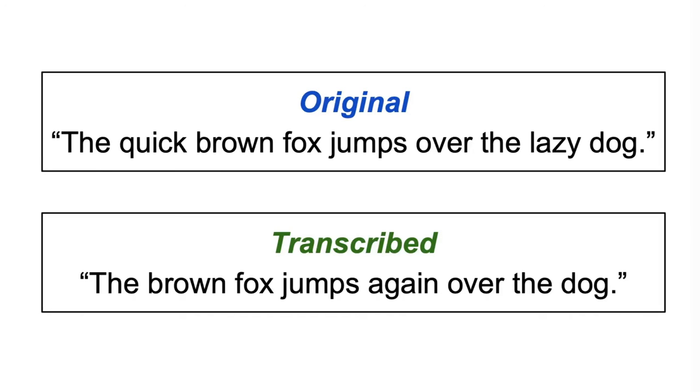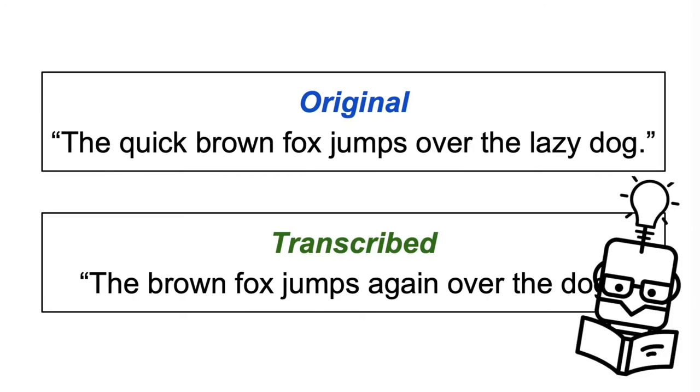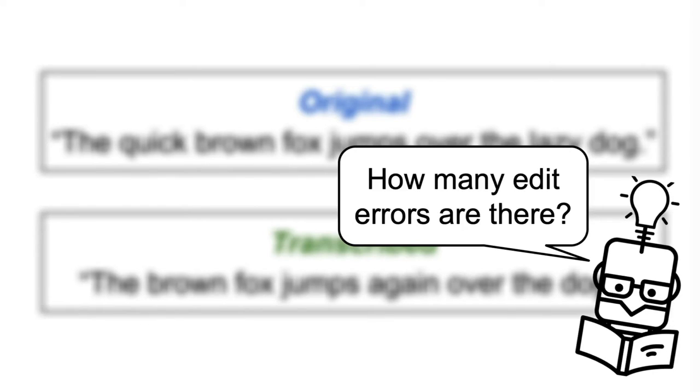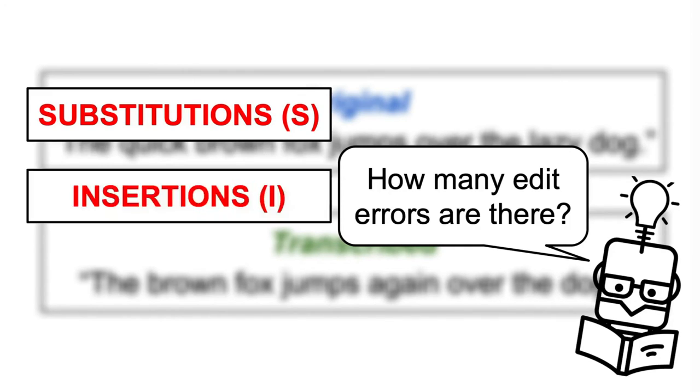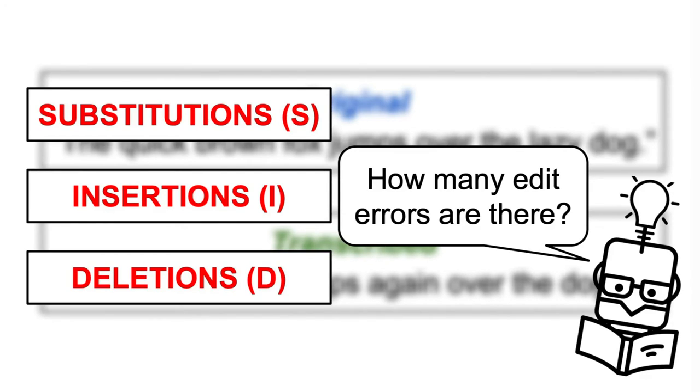The first step in calculating the word error rate is to determine the minimum number of edit operations required to transfer the transcribed text into the original text. This operation could be substitutions, or replacing one word with another, insertions, or adding extra words, or finally deletions, which translate to having missing words.